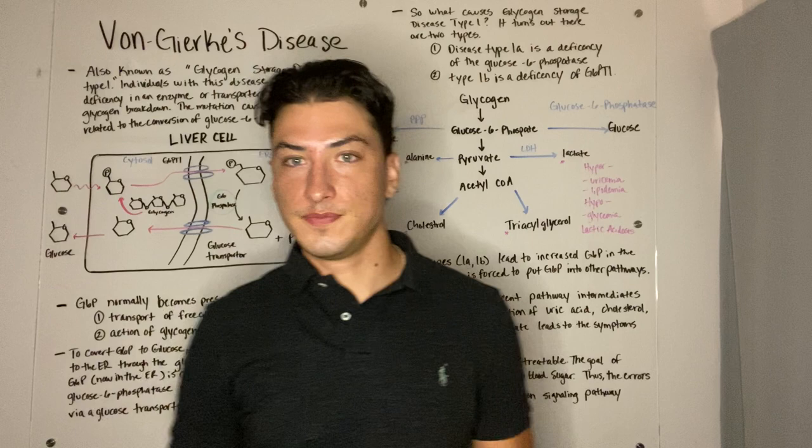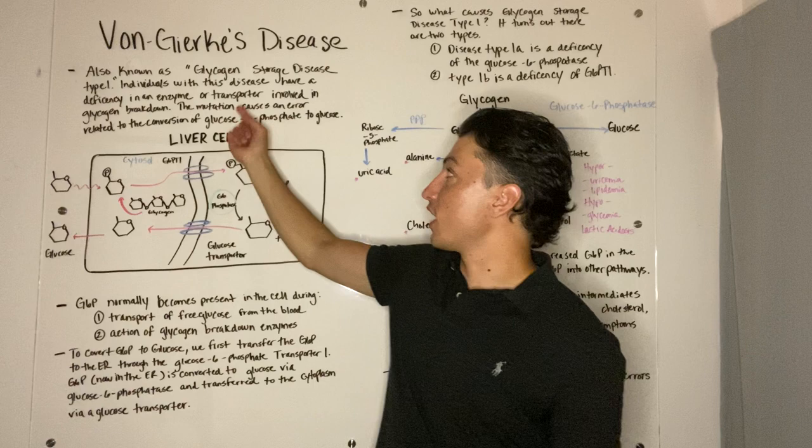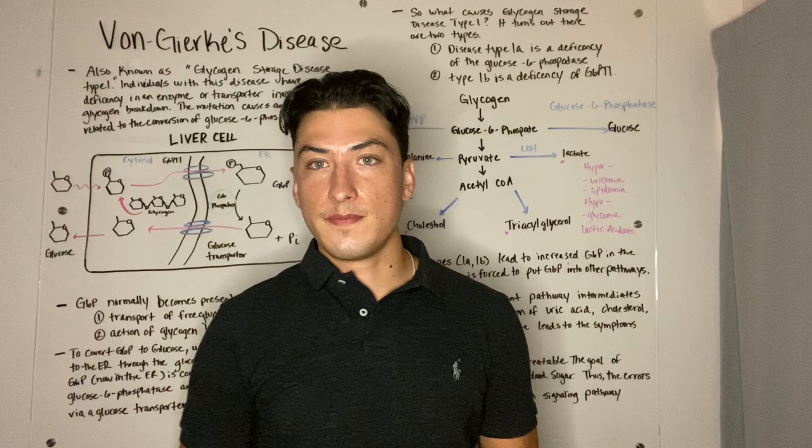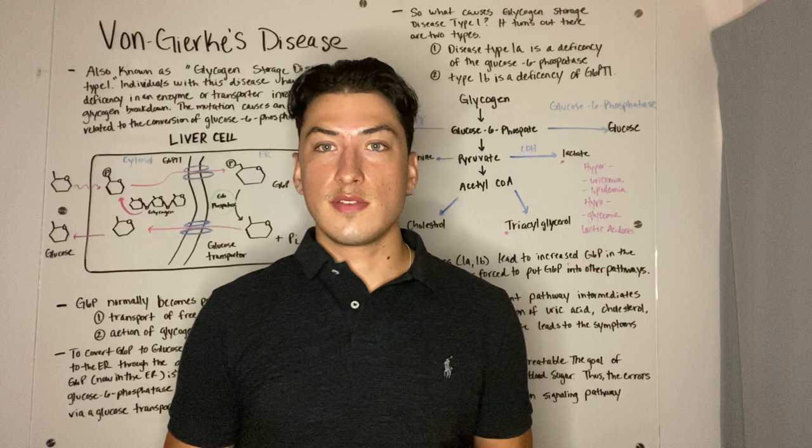Individuals with this disease have a deficiency in an enzyme or transporter involved in glycogen breakdown. This condition usually appears in infants around the age of three to four months, at which time they begin sleeping throughout the night, and the fasting that occurs during sleep will lead to lower blood glucose levels and thus glucagon signaling.